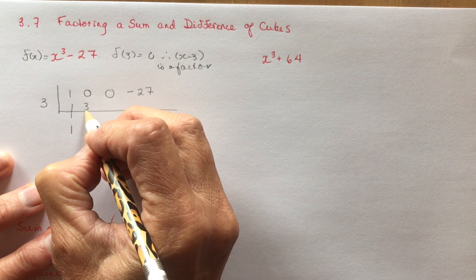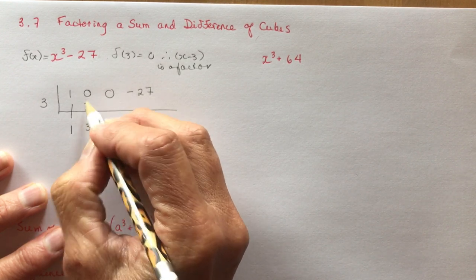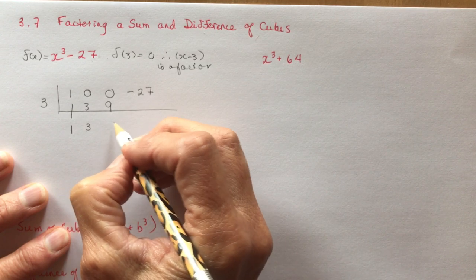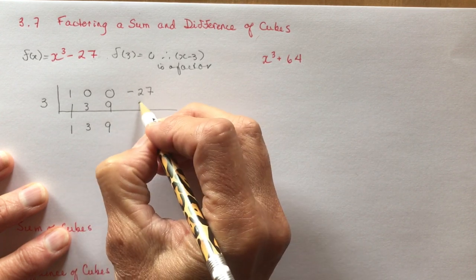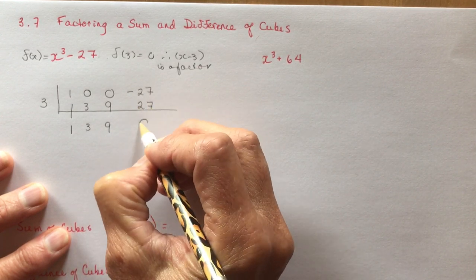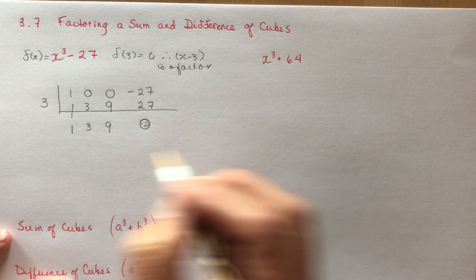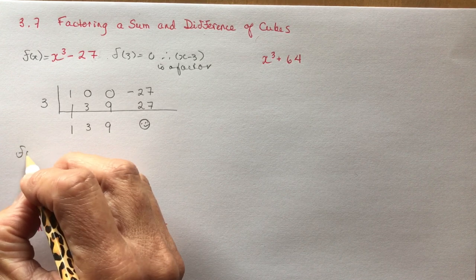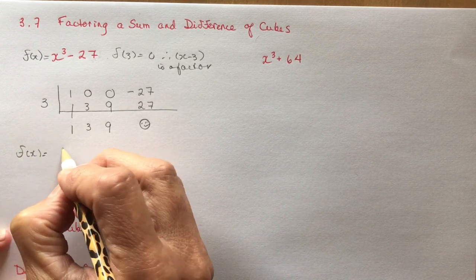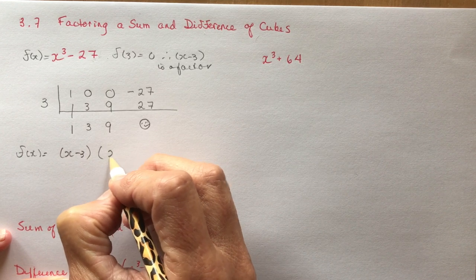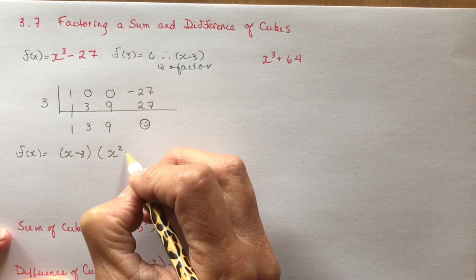To bring down the 1, I multiply, I add them up, I get 3. I multiply, I get 9. I add them up, I get 9. And 9 times 3 is 27. I add it up, and I get 0, which is what you're supposed to get here, right?